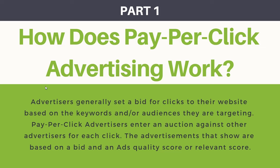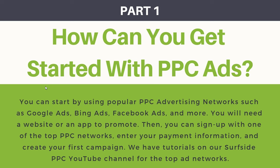That's basically how pay-per-click advertising works — you're bidding on a certain set of targeting, and depending on competitors and other factors, that determines how much you pay, how often your ad shows, and how often it gets clicked. To get started, use popular PPC networks like Google Ads, Bing Ads, or Facebook Ads. You need a website or app to promote, and you'll want to create landing pages for your traffic. Sign up with the networks, enter your payment information, and create your first campaign. We have tutorials on our channel for all the top ad networks, and over time you want to test and optimize.